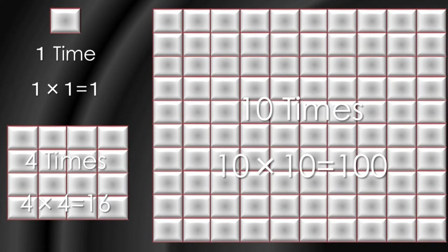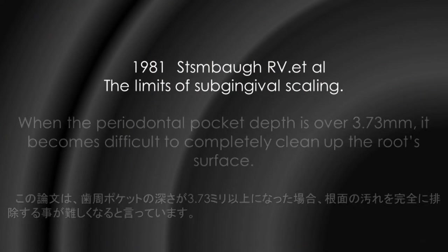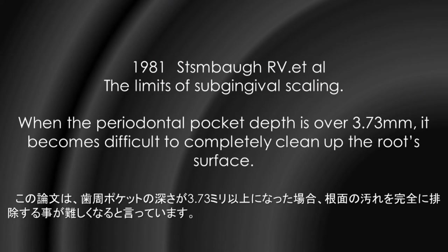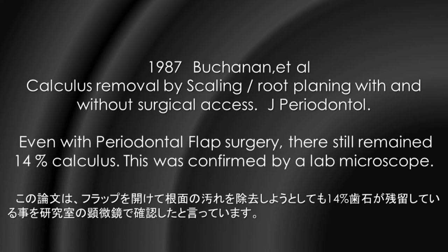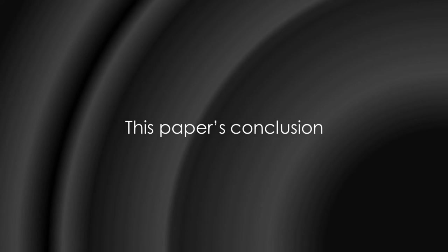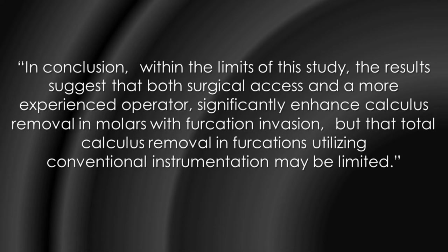This is the amount of information. This paper said: when the periodontal pocket depth is over 3.73 mm, it becomes difficult to completely clean up the root surface. Even with periodontal flap surgery, there still remained 24% calculus. This was confirmed by a lab microscope. In another study, even with periodontal flap surgery, there still remained 14% calculus. This was confirmed by a lab microscope. This paper's conclusion said conventional instrumentation may be limited.